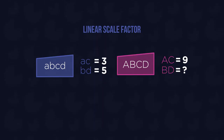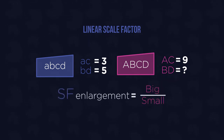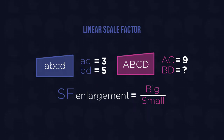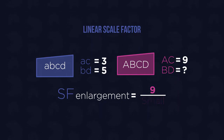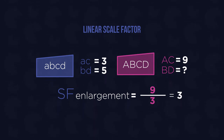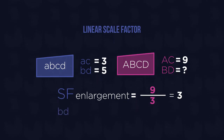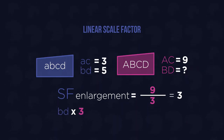B'D' is on the enlarged figure, so we will need to calculate an enlargement scale factor. We divide the size of the big known side, A'C', which is 9, and divide it by the size of the small known side, AC, which is 3. The enlargement scale factor is therefore 3. To calculate the size of B'D', we multiply BD by the scale factor of 3 and we get 15.